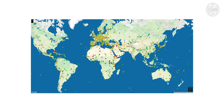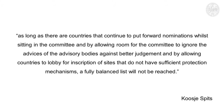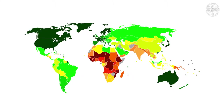For example, Europe has at least three times more heritage sites listed than Africa. In addition, our UNESCO expert Koussi Spitz also points out that as long as there are countries that continue to put forward nominations while sitting in the committee, and by allowing countries to lobby for inscription of sites that do not have sufficient protection mechanisms, a fully balanced list will not be reached. Inequality and heritage do not only occur in the World Heritage List. In fact, one might say, after looking at the map, that it reflects the inequality map of the world.